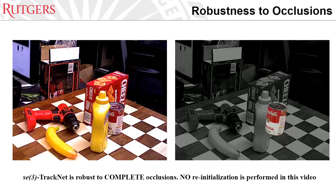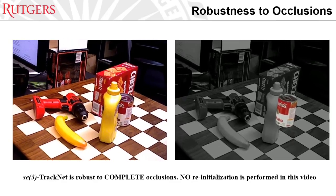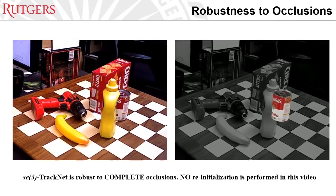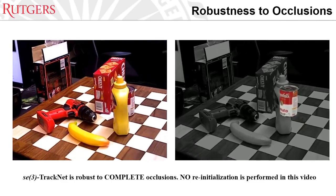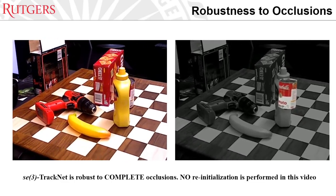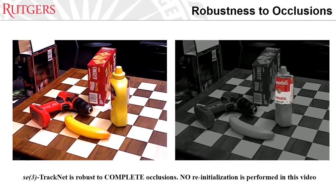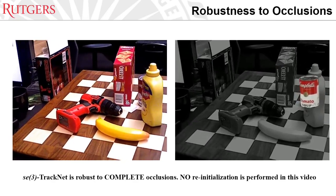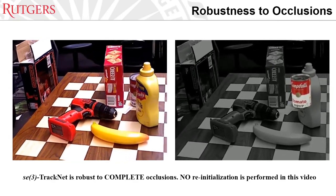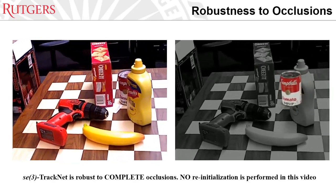Here is an interesting example from the YCB video where complete occlusion happens to the tomato can. We can see that even under such a challenging scenario, SC3 TrackNet is able to keep track of the pose of the tomato can without any reinitialization.